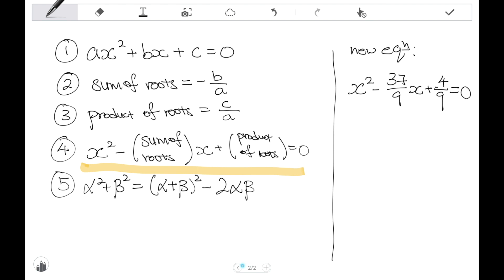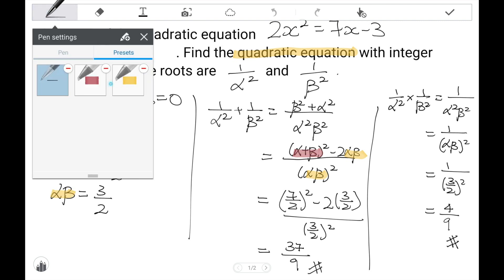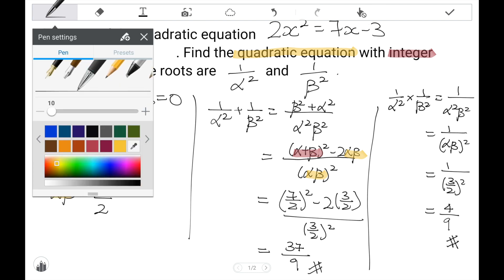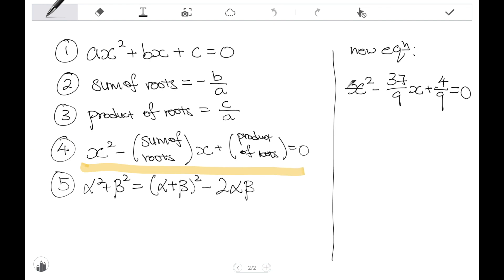There's just this one last part of the question that I want to show you. The last part of the equation, or the problem, said that the quadratic equation should have integer coefficients. So, I'll flip back again to the equation that we have just formed. Can we see that for this coefficient of x squared, it's 1, so no issue. This is negative 37 over 9. That's the issue because it's not an integer. And 4 over 9 as well is not an integer.